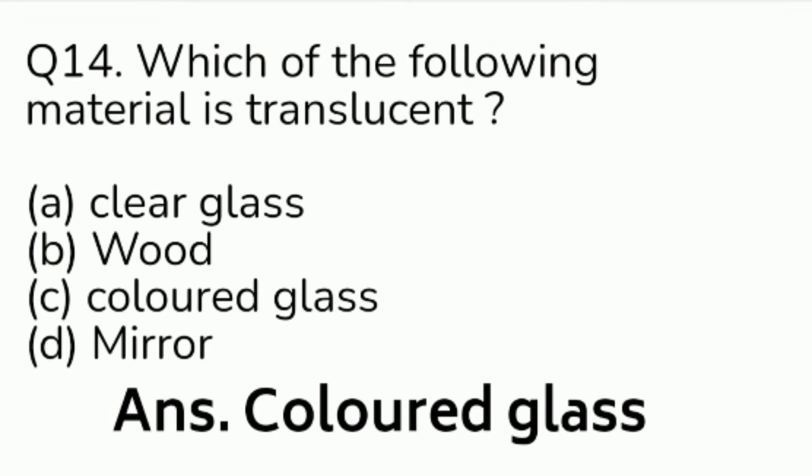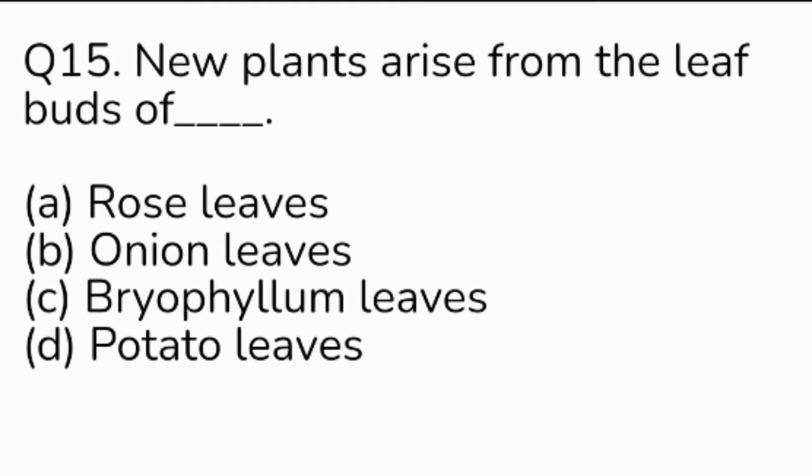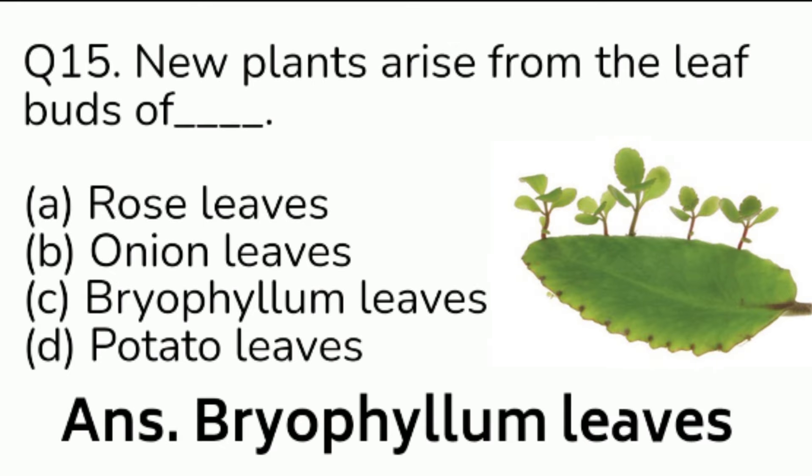Question number 15. New plants arise from the leaf buds of — Option A: rose leaves. Option B: onion leaves. Option C: bryophyllum leaves. Option D: potato leaves. Answer is Option C, bryophyllum leaves.